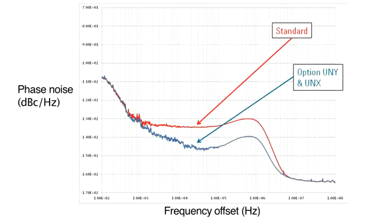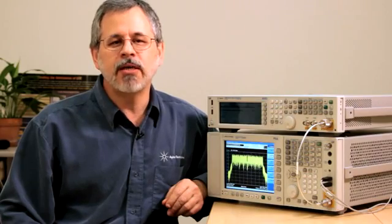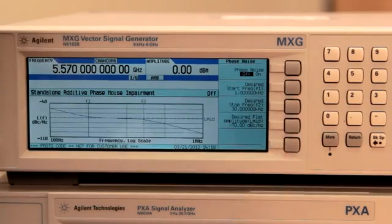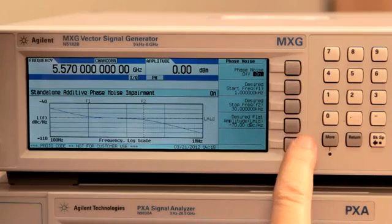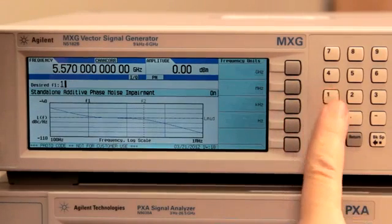The new MXG offers several levels of class-leading phase noise performance for both CW and modulated signals. With its real-time baseband DSP, the MXG also allows you to customize phase noise performance, degrading it to match real-world sources.